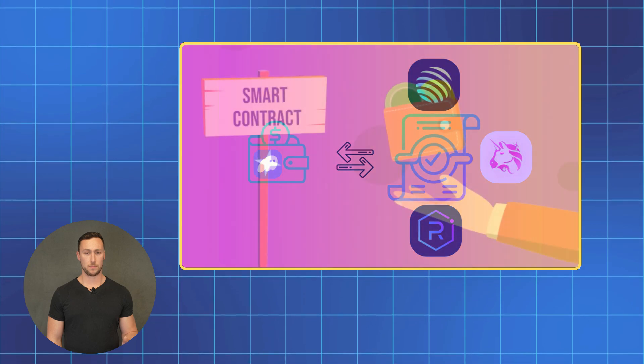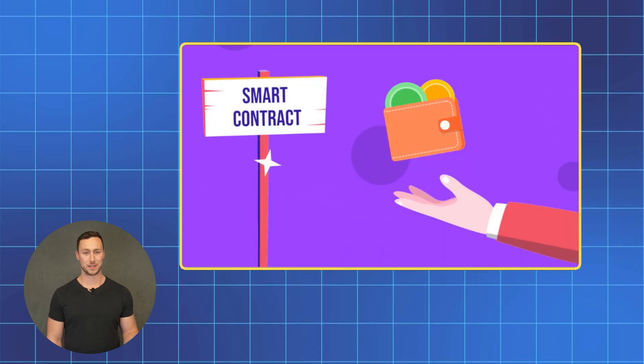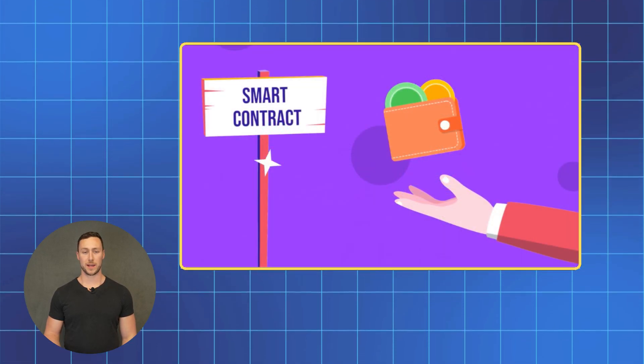Those are AMMs in a nutshell. They're the technology that lets you trade instantly directly from your wallet without needing to match with another trader. Now that you have some background on what automated market makers are, you'll better be able to understand what's happening behind the scenes when you swap tokens on chain in the coming modules.